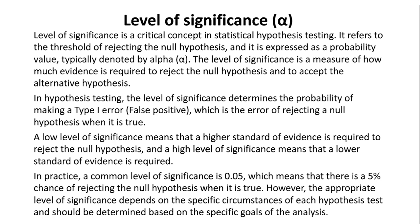It refers to the threshold of rejecting the null hypothesis and it is expressed as a probability value, typically denoted by alpha. The level of significance is a measure of how much evidence is required to reject the null hypothesis and to accept the alternative hypothesis.